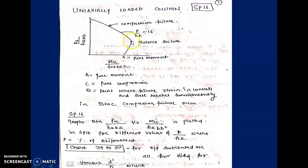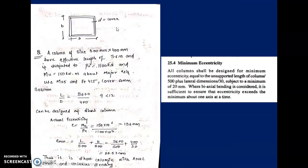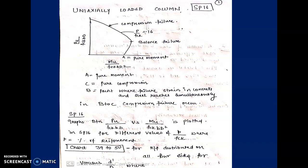Point A is where the column is subjected to pure moment and failure occurs. From point B to C, compression failure occurs. We design for the case where our column lies in the compression failure zone. For that, we refer to SP16, which is a design aid containing charts for Pu/(fck·B·D) vs. Mu/(fck·B·D²) for different percentages of steel.